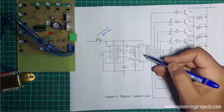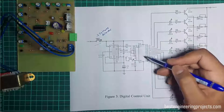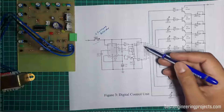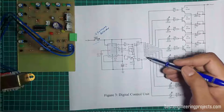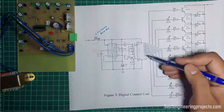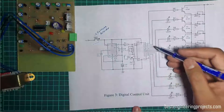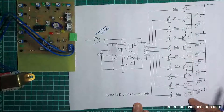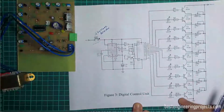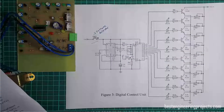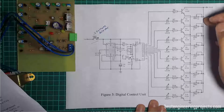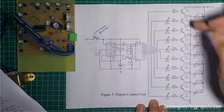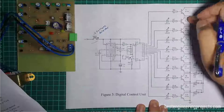IC2 is a decade ring counter and utilizes all outputs from Q0 to Q9. This IC2 decade ring counter has 10 outputs named Q0 to Q9. All outputs from Q0 to Q9 are connected to the base of transistors T1 to T10 through resistors R6 to R50. For voltage selection, 9 different preset or variable resistors BR1 through BR9 are connected to the collectors of 9 different transistors ranging from T2 to T10.